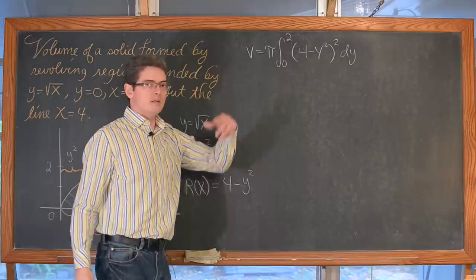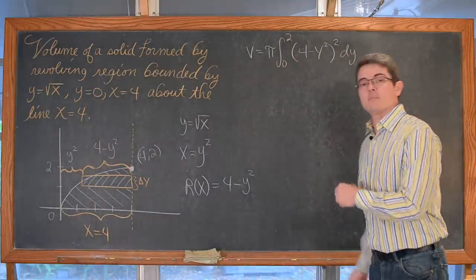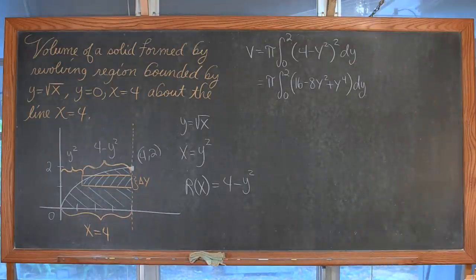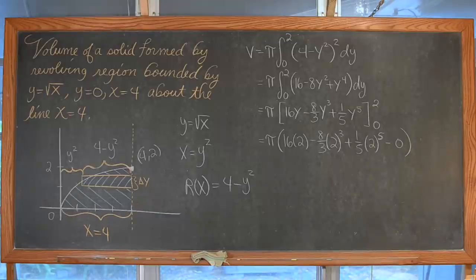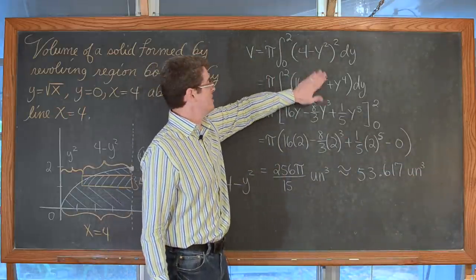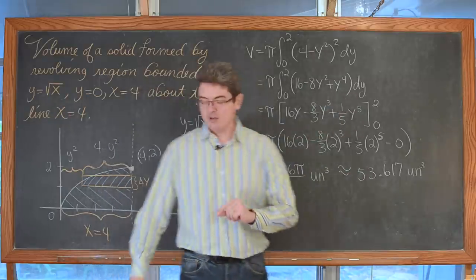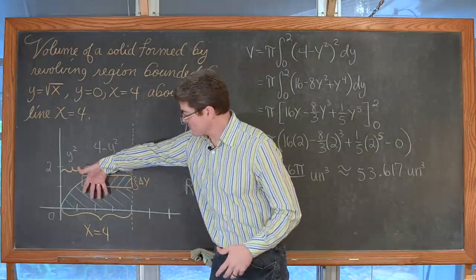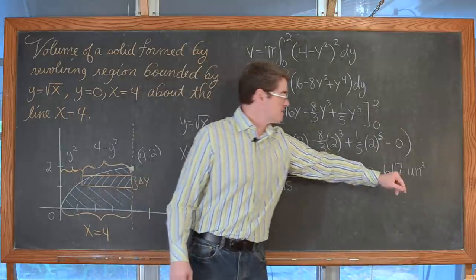I will step off and reveal the solution step by step. Taking that binomial, squaring it, combining like terms, going through the process of finding the integral and evaluating the definite integral — the volume of this solid formed by taking this region and rotating it around the line x equals 4 comes out to approximately 53.62 cubic units.